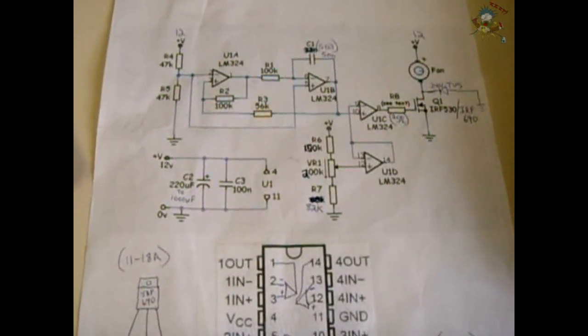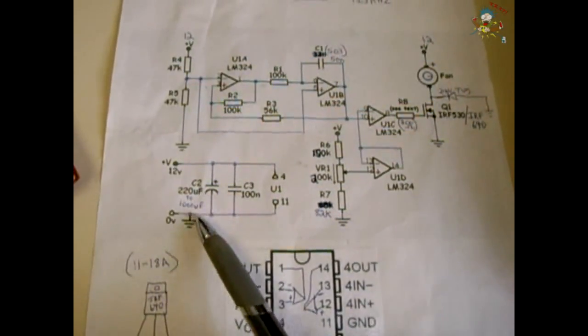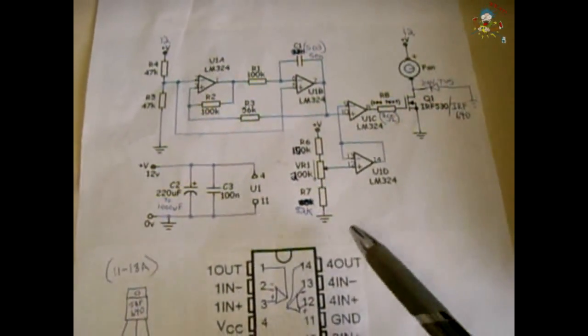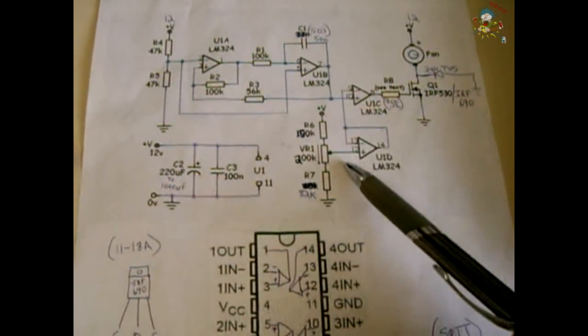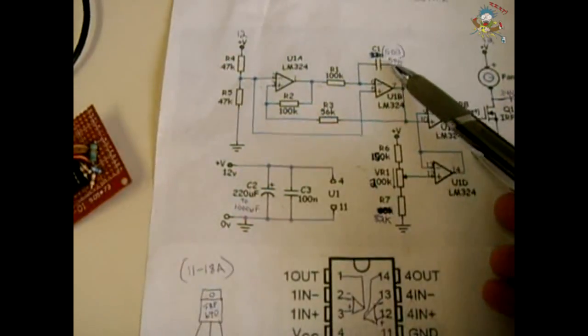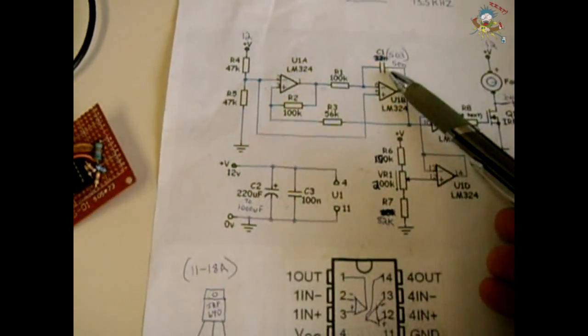The schematic is pretty simple. This is just your power supply section right here. Over here is a voltage divider. Then you have another voltage divider here which is used to adjust the pulse width. This capacitor right here, C1, is an important capacitor.